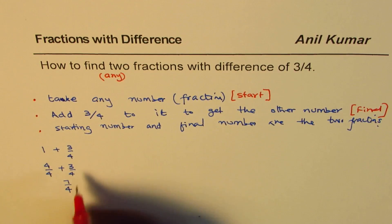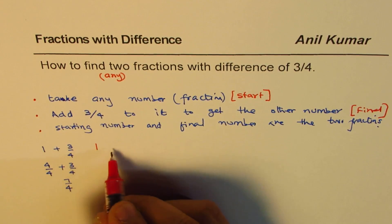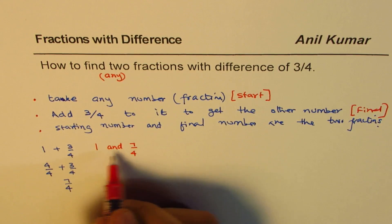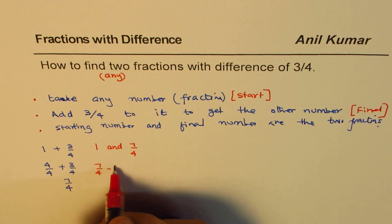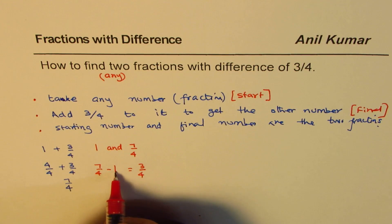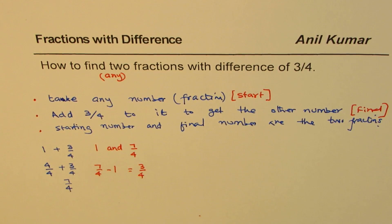So, the answers are 1 and 7 over 4. So, what we get here is the two numbers are 1 and 7 over 4. So, the difference between them, that means 7 over 4 minus 1 is equals to 3 by 4. 1 could be written as 4 over 4. So, that is one way of doing it.